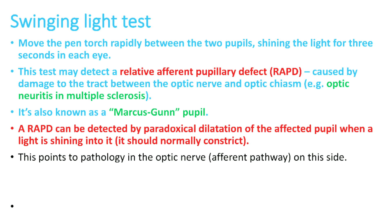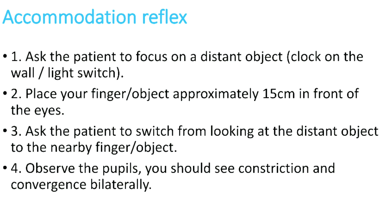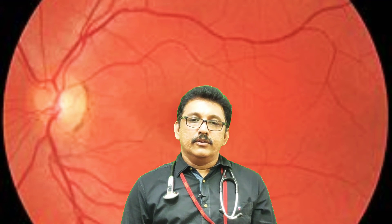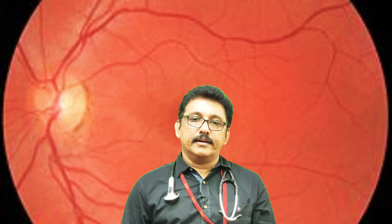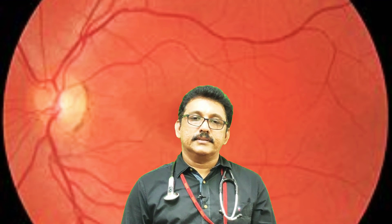For the accommodation reflex, sit in front of the patient and ask them to focus on a distant object such as a clock on the wall. Then suddenly place your finger approximately 15 centimeters in front of the patient and ask them to switch their gaze from the distant object to the nearby finger. In a normal person, you will observe pupillary constriction and convergence of the eyes bilaterally.